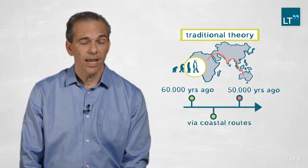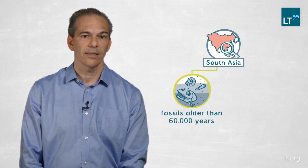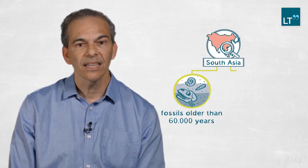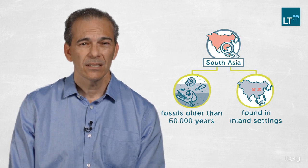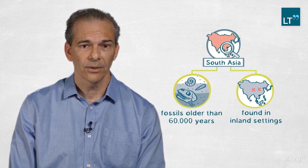Our research has actually challenged that traditional theory. Some of the fieldwork we've been doing in the southern route in Arabia and South Asia shows we have archaeological sites and even fossils older than 60,000 years ago. They are found in inland terrestrial settings, suggesting that coastal routes were either used rarely or not at all.